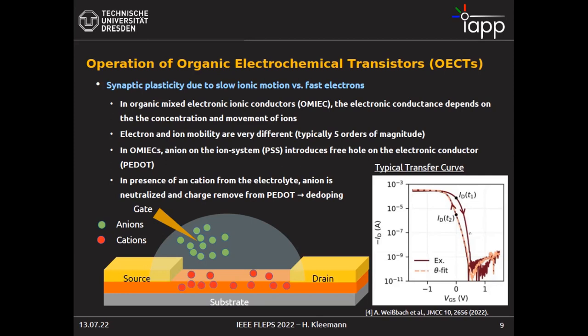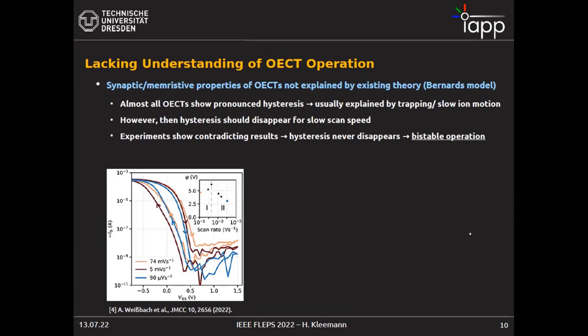We asked how we could approach this. Looking more deeply, the models don't fit what we see in our experiments — and there's also the fact that the transfer characteristic current saturates. There's a saturation in the transfer curve, which is completely unexpected from an OECT, yet no one discusses this. So we started looking at the different transient properties of OECTs rather than only at the static ID curves.